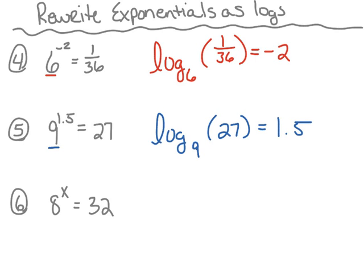Last example: 8 to the x power is equal to 32. We're going to rewrite this as a log. This becomes log base 8 — that's this here — of 32, which is our argument. And it equals to the exponent, which this time is x. So we read this as log base 8 of 32 equals x.